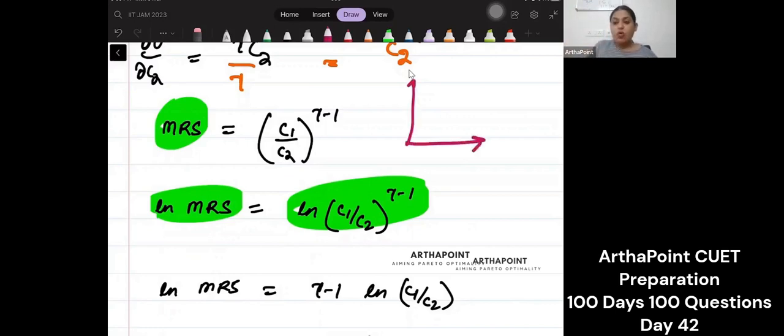Jo Y axis pe aata hai, wo upar hota hai elasticity of substitution mein. So if it is C1 by C2, I need to reciprocate this. In order to reciprocate it, it means power will be multiplied with minus 1.